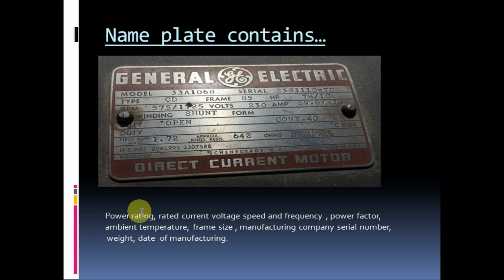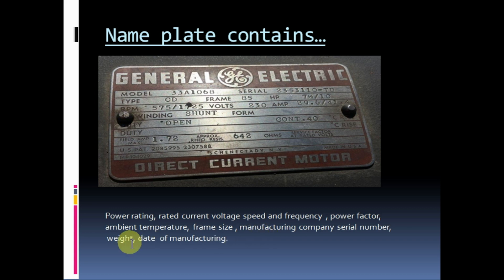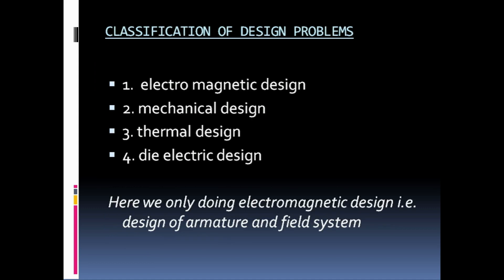Usually the nameplate of a machine contains its power rating, rated current, voltage, speed and frequency, power factor, ambient temperature, frame size, manufacturing company serial number, weight, and date of manufacturing.